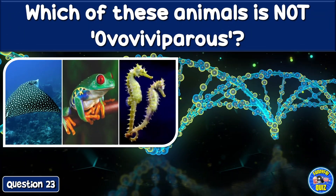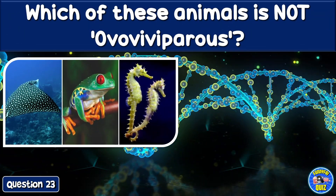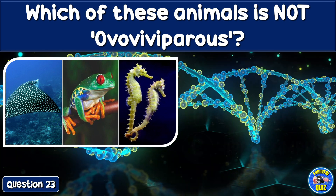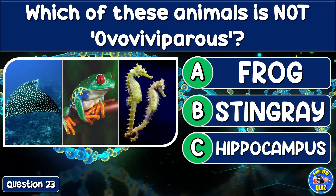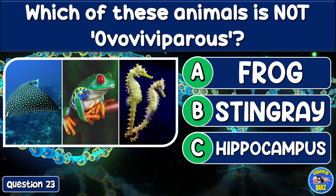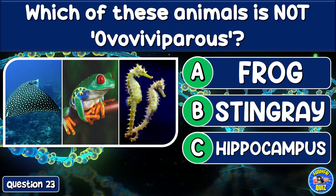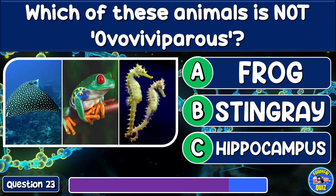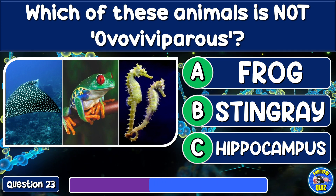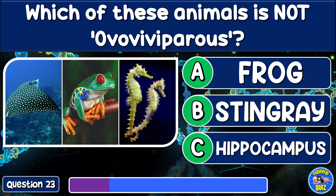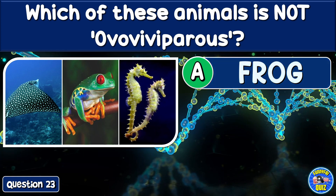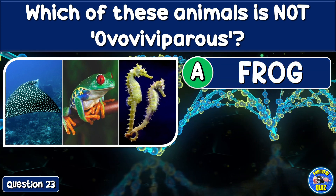Which of these animals is known as ovoviviparous? Frog, stingray, or hippocampus? Frog.